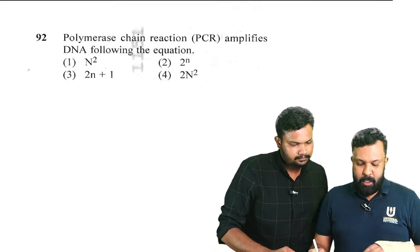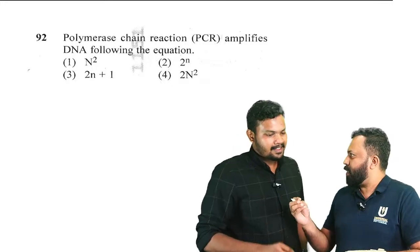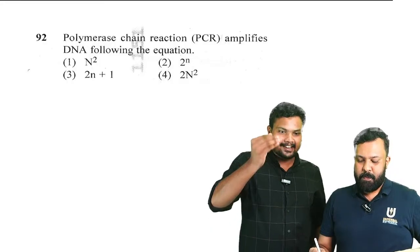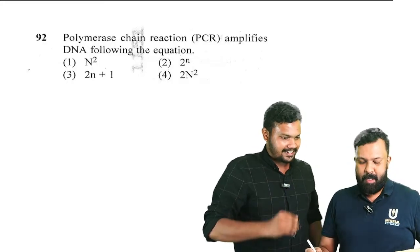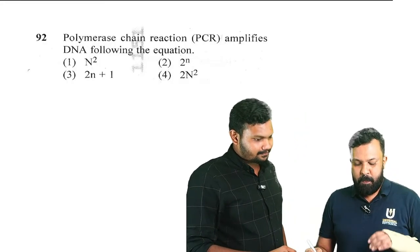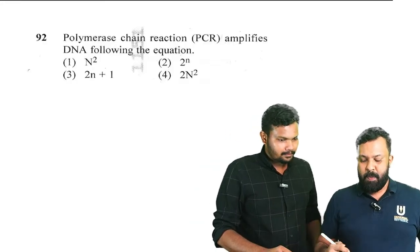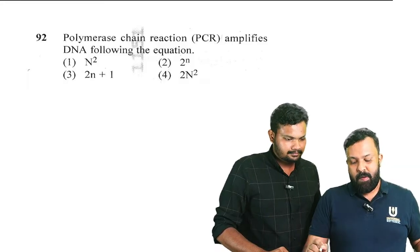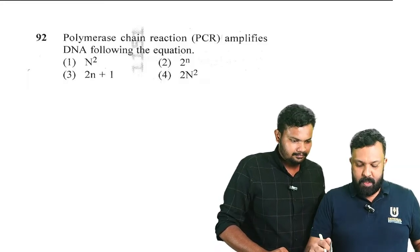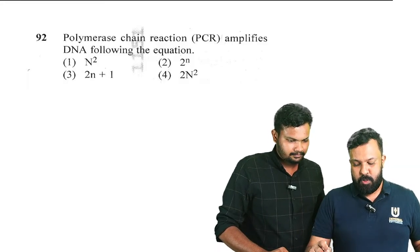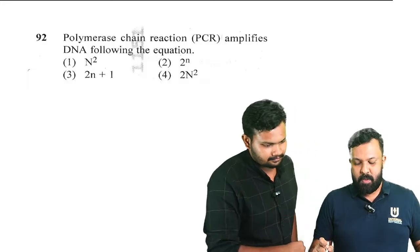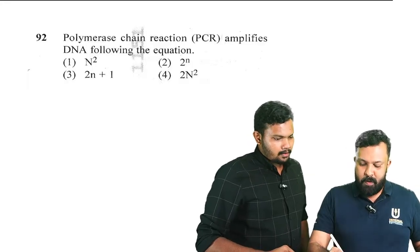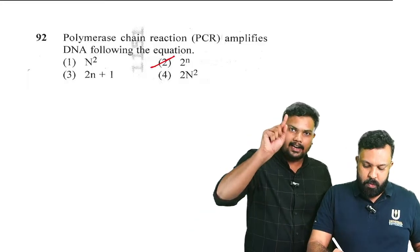Question number 92: the cycle of DNA is the same — doubling per cycle. Polymerase chain reaction (PCR) amplifies DNA following the equation. Options: n raised to 2, 2 raised to n, 2n plus 1, 2n raised to 2. Obviously, doubling follows a geometric pattern, so option 2 — that is 2 raised to n — is the correct answer.